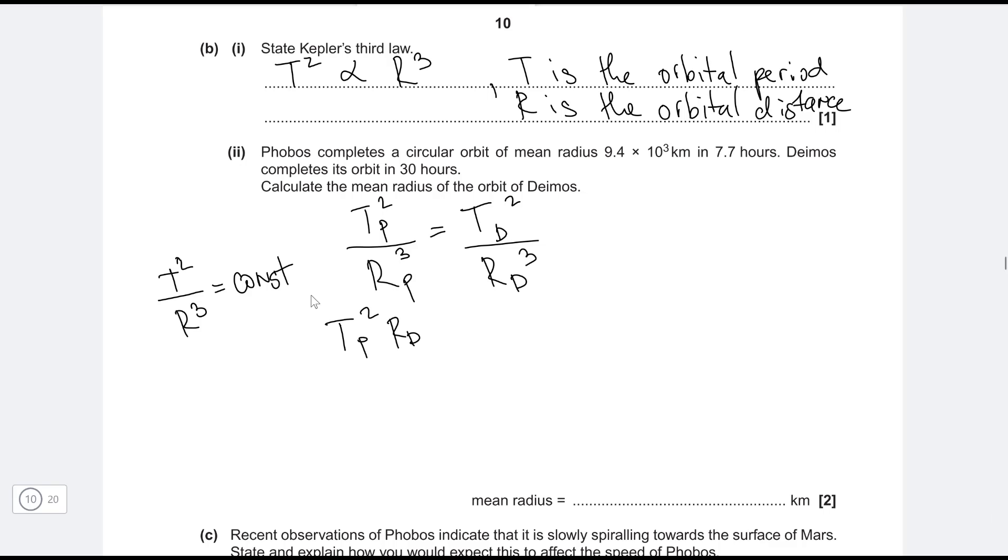So what I'm going to do is just cross multiply. So tp squared times rd cubed is equal to td squared times rp cubed. And finally, we're just going to get that rd cubed is equal to the time period of Deimos squared multiplied by the orbital period cubed divided by tp squared.